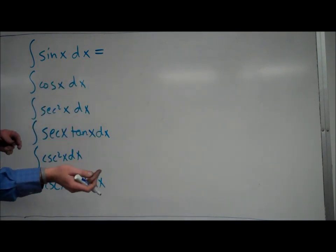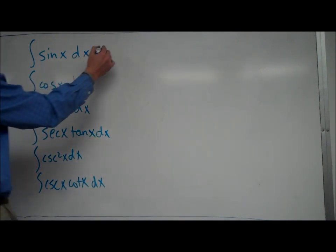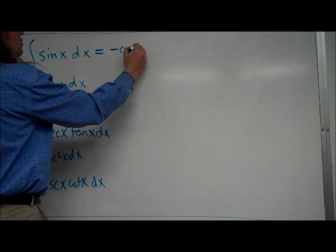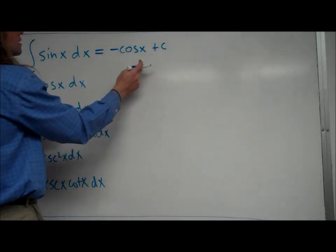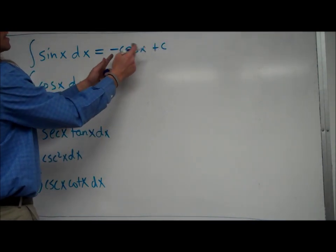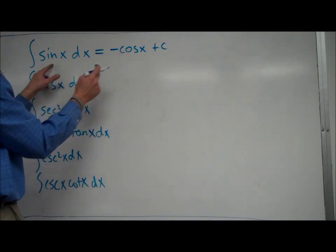Since the derivative of cosine is negative sine x, this antiderivative is actually going to be negative cosine x plus c. When you take the derivative of cosine, it's a negative sine, and that negative is going to cancel to make that positive.